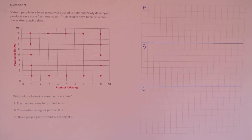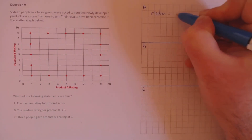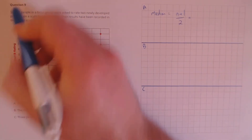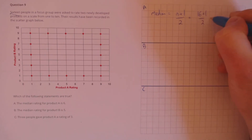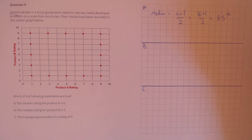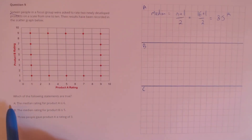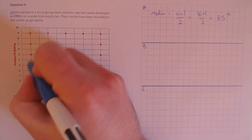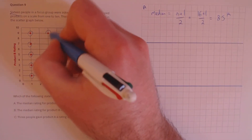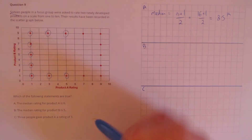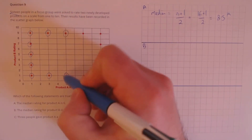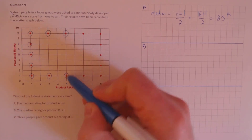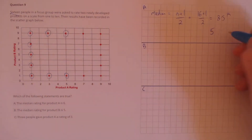Question 9. 16 people in a focus group were asked to rank two newly developed products on a scale from 1 to 10. Which statements are true? Statement A: the median rating for product A is 6. With 16 people, the median is the (16+1)/2 = 8.5th number. Counting up product A marks in ascending order: 1, 2, 3, 4, 5 — they all have a rating of 1 — then 6, 7, 8, 9. The 8th and 9th numbers both have a rating of 5, so the median is 5. The claim was 6, so that is false.